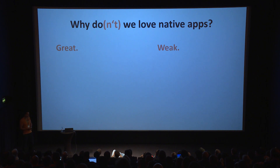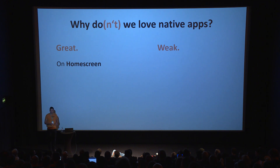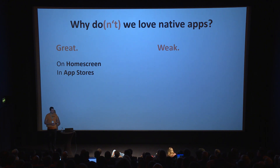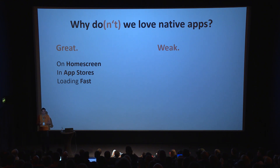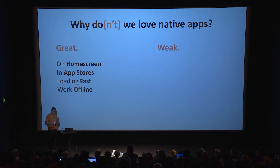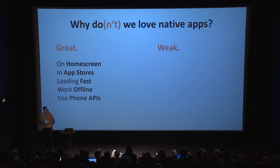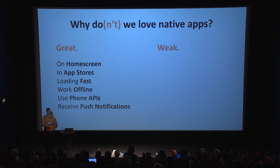Let me start with what we love or don't love about native apps. The great thing about native apps is you always have them on your home screen, so they're easily accessible. You have app stores where you can find all these different native apps. Typically they load quite fast, because all of the data needed for displaying is packaged into an installable bundle. They work offline usually. You can use all the native phone APIs like geolocation, camera, and so on. And you can receive push notifications, which is an important way to re-engage with your users.